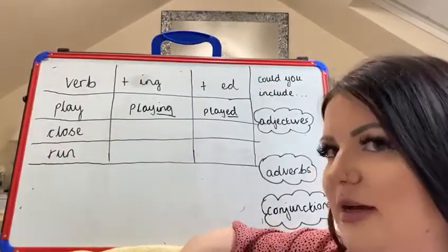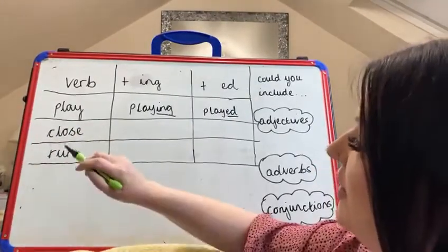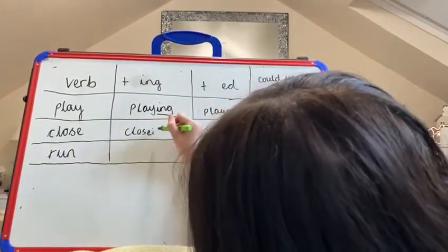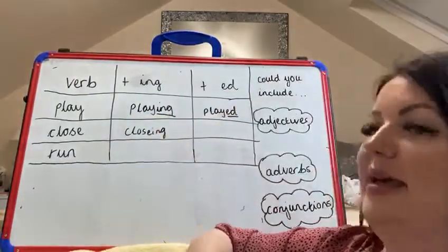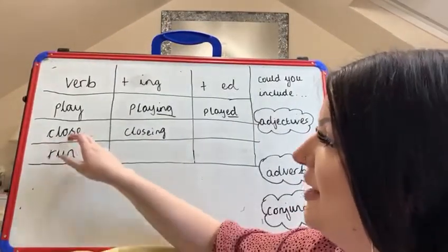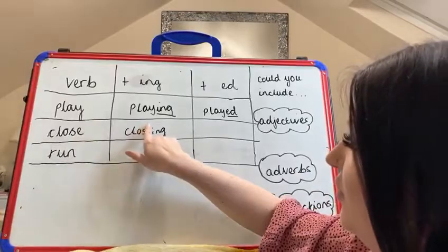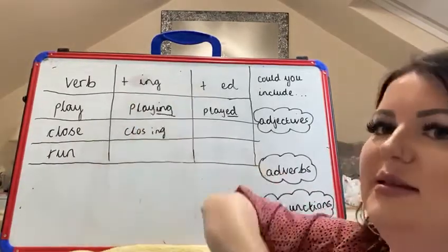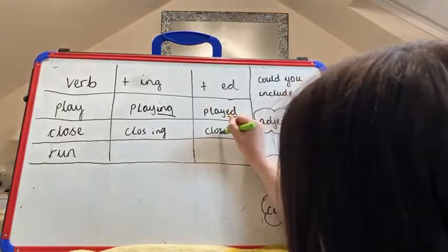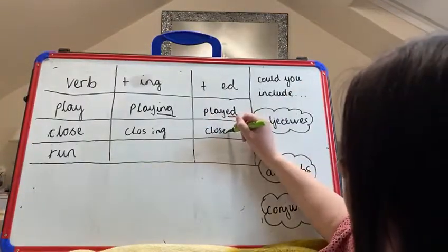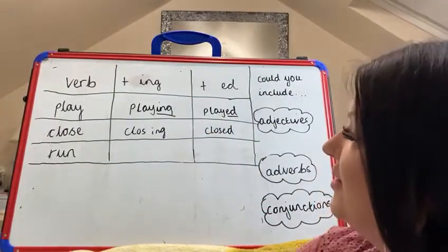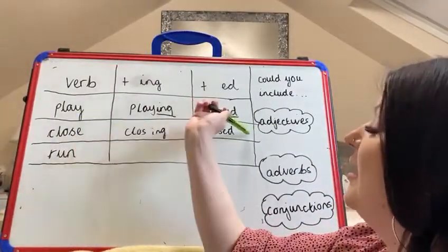Now 'close.' We're thinking about opening and closing here. If I just add '-ing' directly, that's not right. If the verb ends in an 'e,' I need to remove the 'e' and just add '-ing.' With adding '-ed,' I don't need to add '-ed' — I just need to add the 'd.' So we've got: close, closing, and closed.